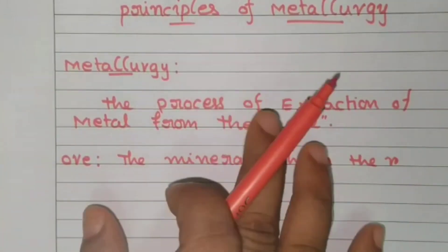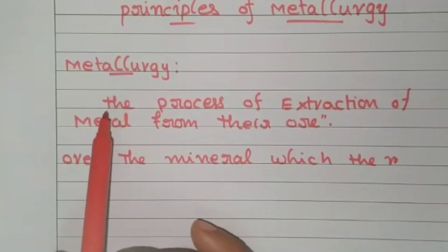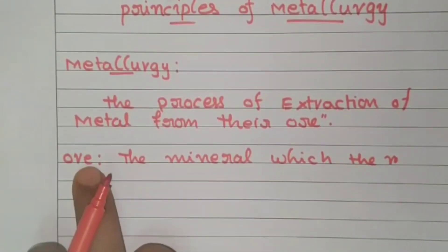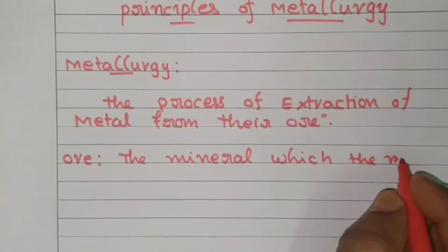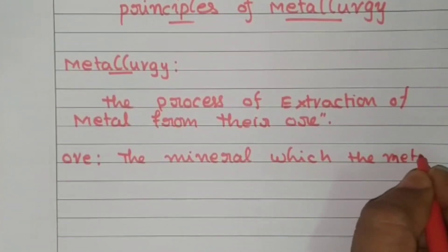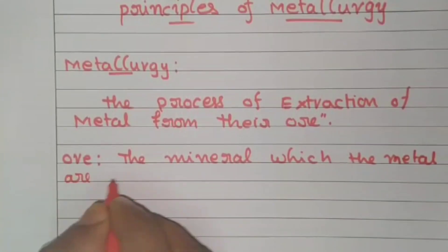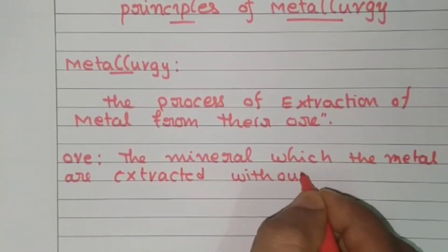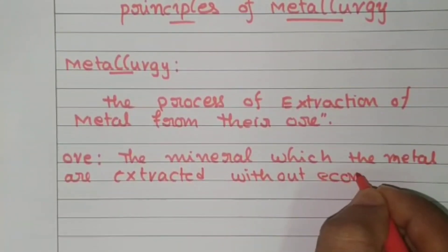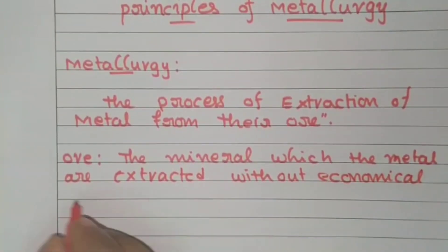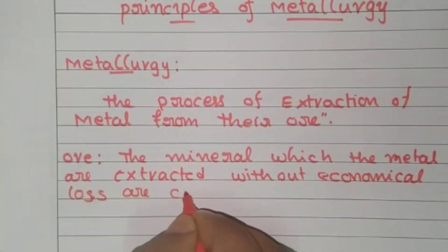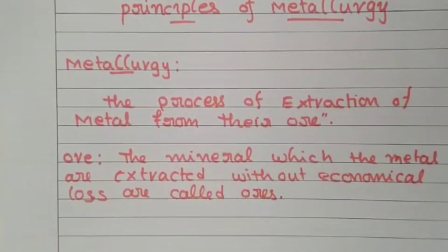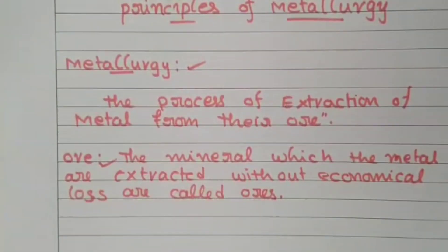Principles of Metallurgy is one topic in chemistry. The process of extraction of metals from the ores is called metallurgy. Ores means the minerals from which metals are extracted without economical loss — those are called ores. So these are the two definitions: metallurgy and ores.